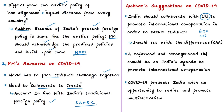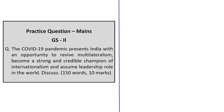The Prime Minister has not made any reference to the role of the United Nations, perhaps because of remarks made by the UN Secretary-General on the recent amendment to the Citizenship Act of 1955. The author tells that such actions should not influence India's long-standing commitment to the United Nations. A reformed and strengthened United Nations should be on India's agenda to promote international cooperation. To conclude, COVID-19 presents India with an opportunity to revive and promote multilateralism.